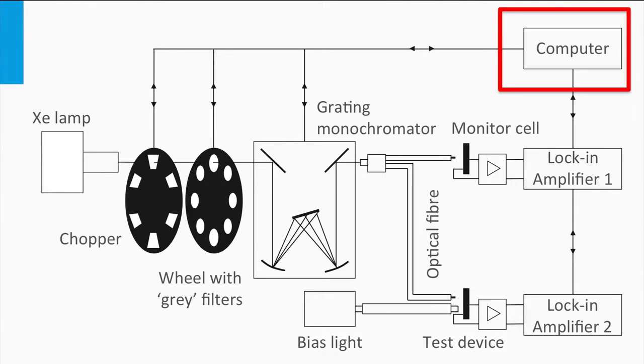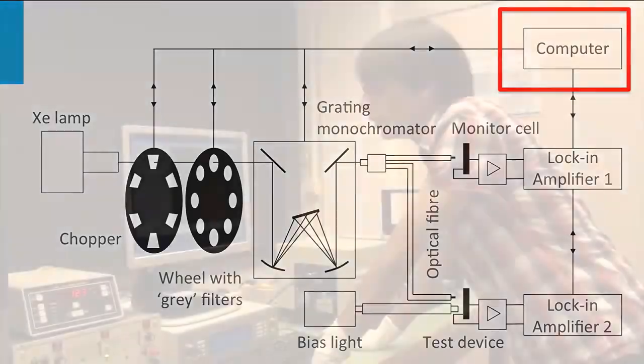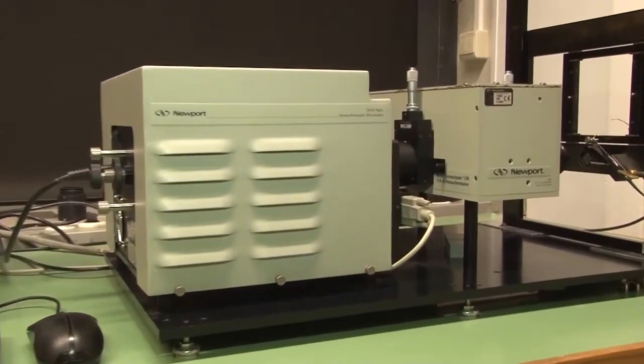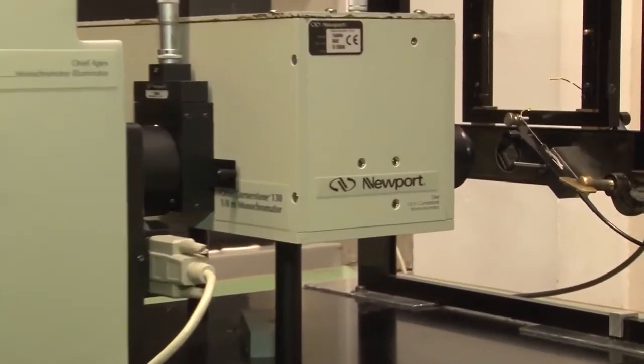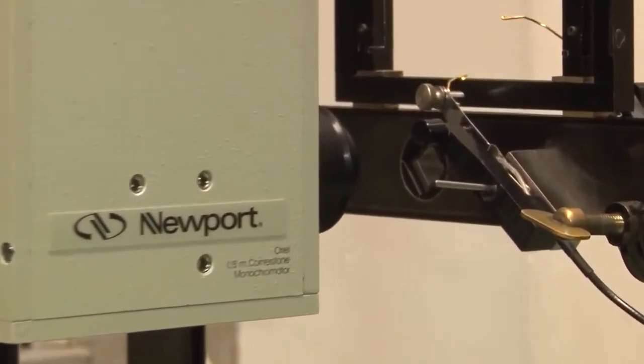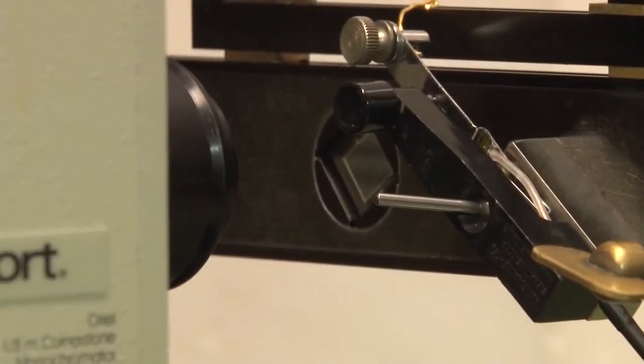Let's go to the PV lab to see a typical measurement of an EQE setup. This is an example of a home-built EQE setup used to measure the spectral response of small lab-scale solar cells. Here we see the xenon light source and the monochromator. To demonstrate the operation of the monochromator, we look at the light output incident on a piece of paper in the dark. We show a condition in which only a narrow wavelength range in the blue light is incident on the paper, then we move from blue to green light, and then from green to red light.